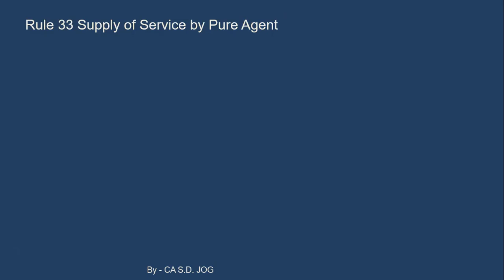Now we discuss a very important concept under Rule 33: supply of services by a pure agent. This rule is applicable only for supply of services, not for supply of goods. Sometimes a supplier — say Mr. A — is providing a service to Mr. B and incurs costs while working as an agent on his behalf, then recovers reimbursement from Mr. B. Whether that reimbursement will be included in the value of supply for GST purposes is covered under this rule.